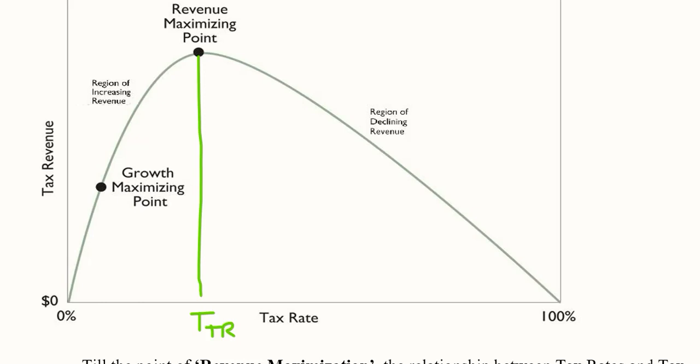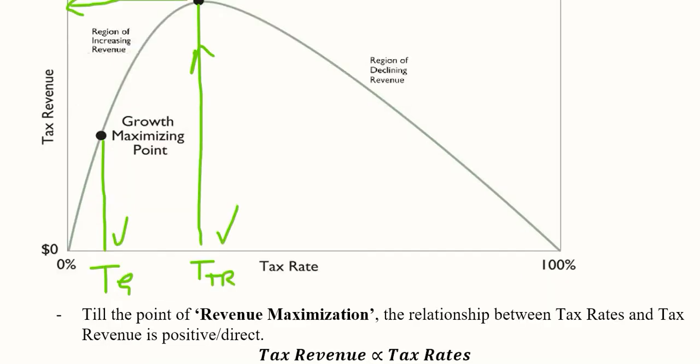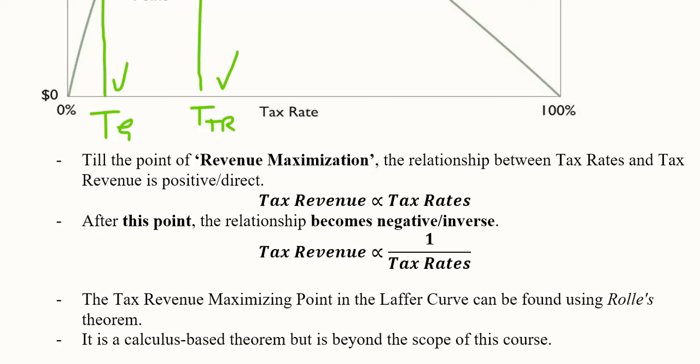For the growth rate of the economy, the tax rate would be most suitable from the growth point of view. Here growth will be desirable, here tax revenue will be desirable. This is how the Laffer Curve gives us two options: either to maximize growth or to maximize tax revenue.